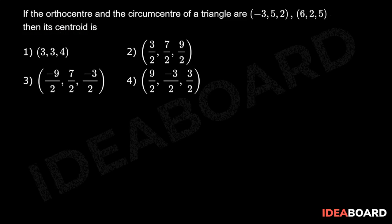Given orthocenter H equals (-3, 5, 2) and circumcenter S equals (6, 2, 5). We know that the centroid G divides the line joining the orthocenter and circumcenter in the ratio 2 is to 1.